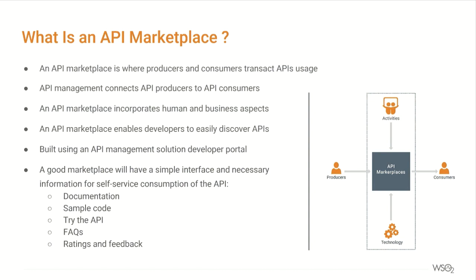A good API marketplace should be simple to use so that API developers can easily publish and API consumers can easily search for the APIs they want. At the same time, it should have detailed documentation. There should be a mechanism to provide feedback that enables interaction between API developers and consumers. These characteristics define the quality of a good API marketplace.